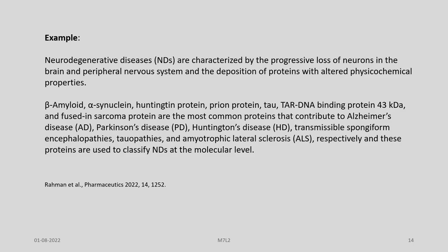Neurodegenerative diseases are characterized by the progressive loss of neurons in the brain and peripheral nervous system, and the deposition of proteins with altered physico-chemical properties. Proteins like beta-amyloid, alpha-synuclein, huntingtin, prion, tau and others are the most common proteins contributing to diseases like Alzheimer's, Parkinson's, Huntington's, transmissible spongiform encephalopathy, tauopathy, and amyotrophic lateral sclerosis. These proteins are used to classify neurodegenerative diseases at the molecular level.